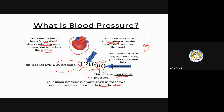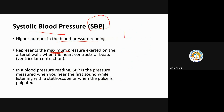As I mentioned, the highest pressure occurs when the heart is pumping. Between one heartbeat and the next is when the pressure is at its lowest — that will be diastolic. The maximum pressure exerted on the arterial wall at the time of heartbeat is called systolic blood pressure. In a blood pressure reading, SBP is measured when you hear the first sound through the stethoscope or when the pulse is palpated.